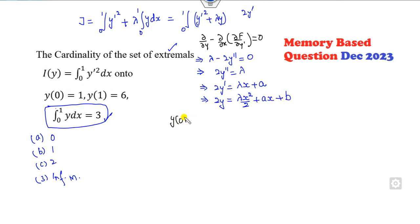Now you can see what is given to you. Y of 0 is 1. What does it mean? 1, this is 2. This is 0, this is 0. So b will be 2. Y of 1 is 6. What is that? It's 12. This is lambda over 2 plus a. B is 2. So what I can say is lambda over 2 plus a is equal to 10.